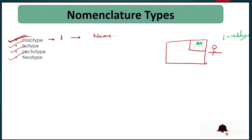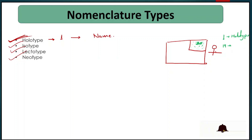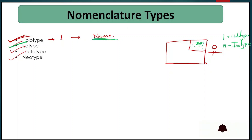After designating the holotype, the remaining 19 samples — which were collected at the same time and from the same place — are called isotypes. So isotype refers to those duplicate specimens collected simultaneously from the same location.